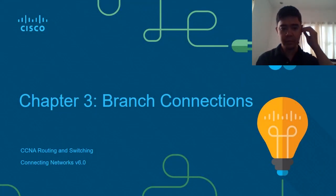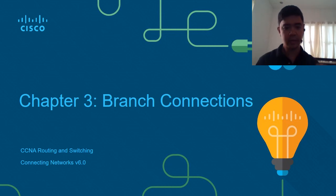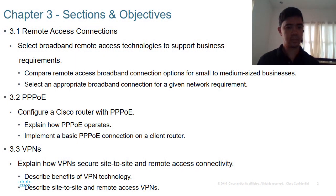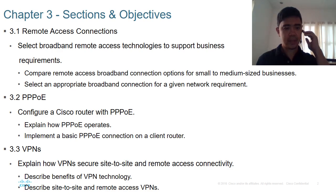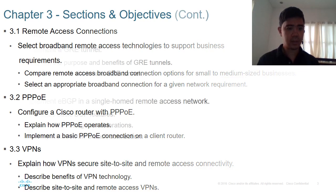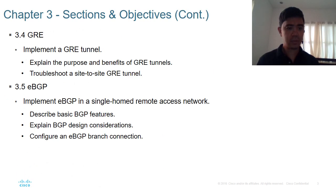This is the video discussion of Chapter 3, Cisco 4, entitled Branch. In this chapter, we are to cover two popular broadband technologies: DSL and cable. We are to compare and contrast the two technologies. And then we are to cover PPPoE, VPN, GRE, and BGP.